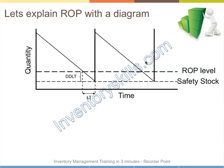Let's look at the reorder point on a diagram. I have quantity on the vertical axis and time on the horizontal axis. We start off with some stock, and you're consuming items. It reaches this point, which we've determined as the reorder point level. I've also incorporated some safety stock on this diagram.